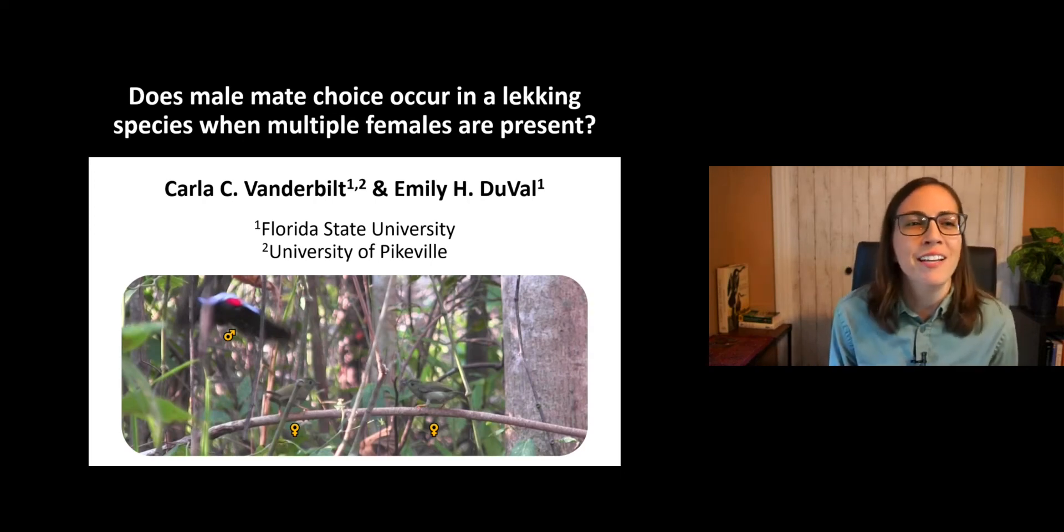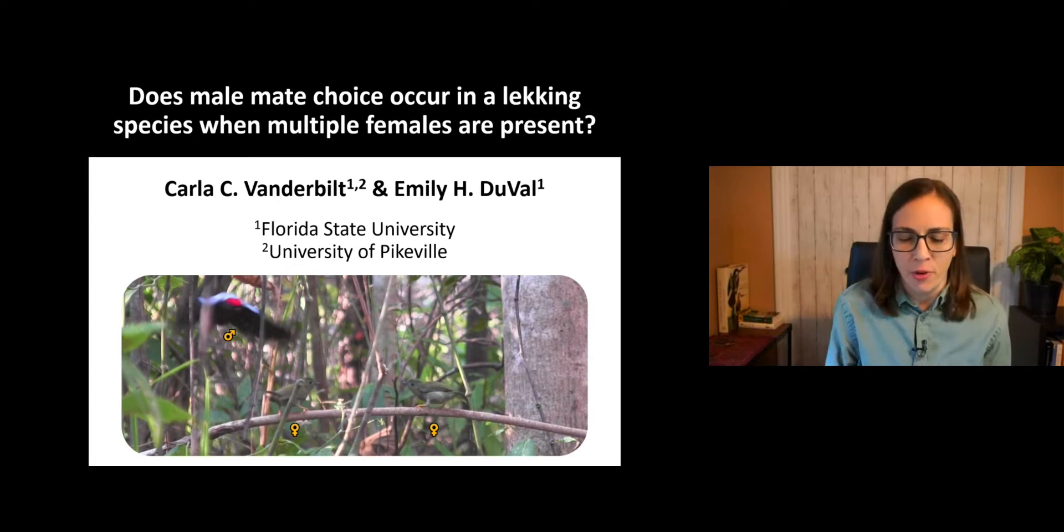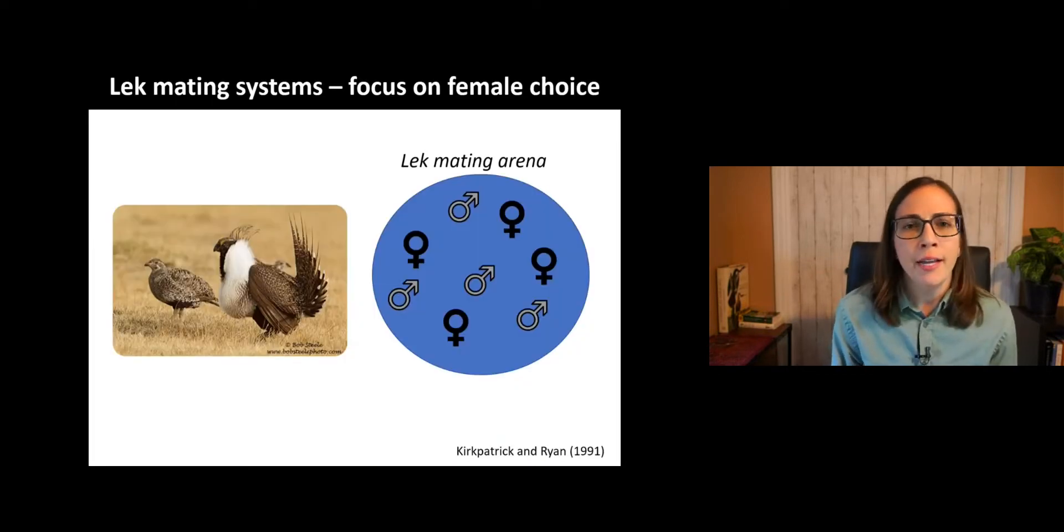The title of this talk is, Does Male Mate Choice Occur in a Lekking Species when Multiple Females Are Present? In a lek mating system, males congregate in groups called leks to display for visiting females, and only a few of the males receive the majority of the matings. In this mating system, males do not provide any offspring care.